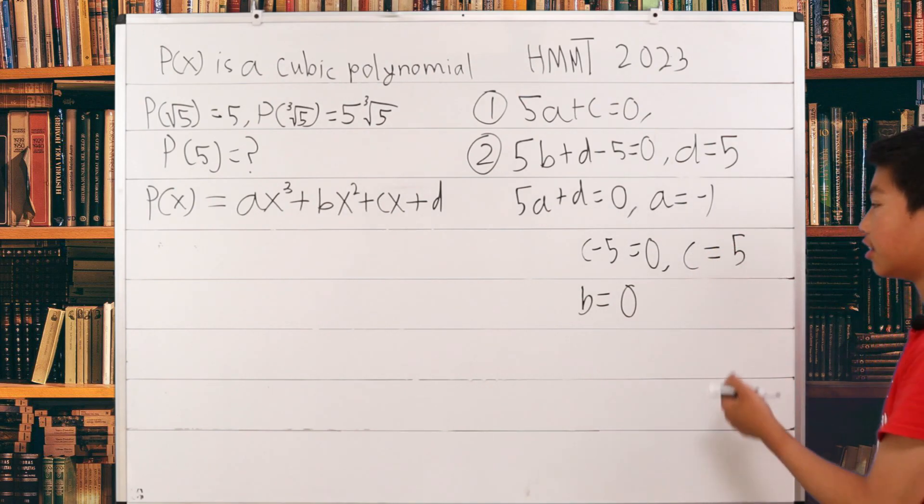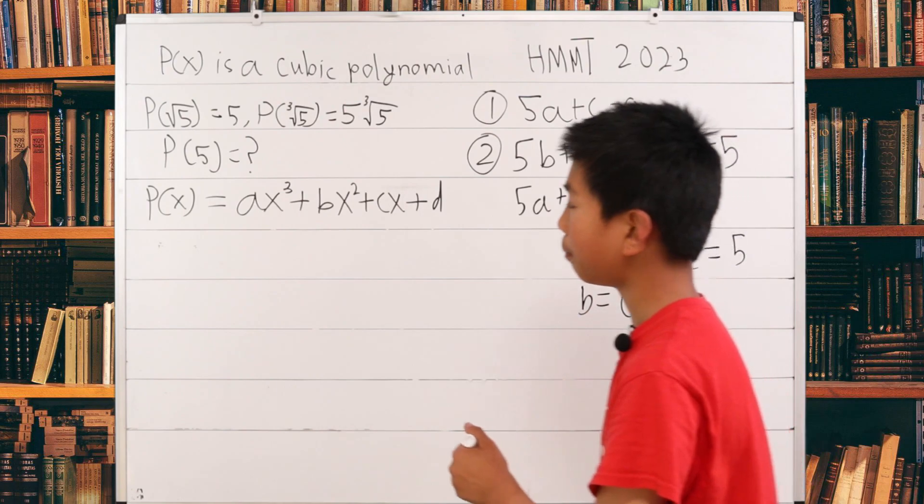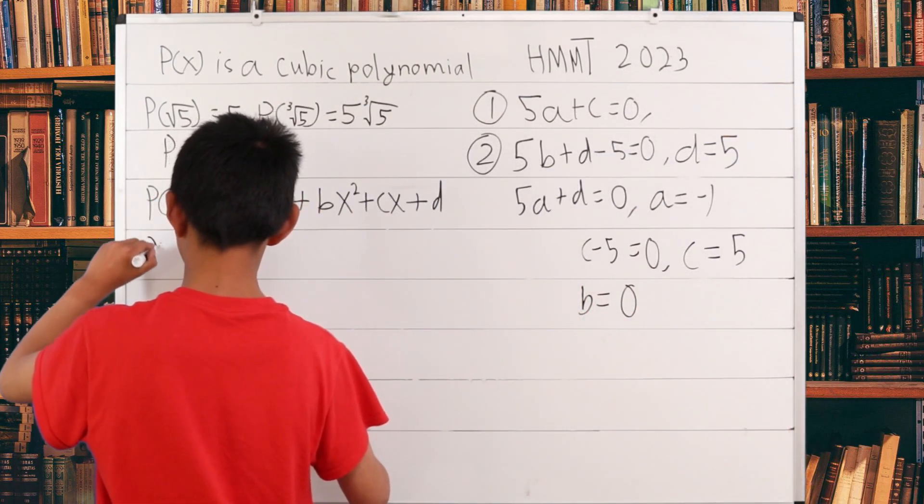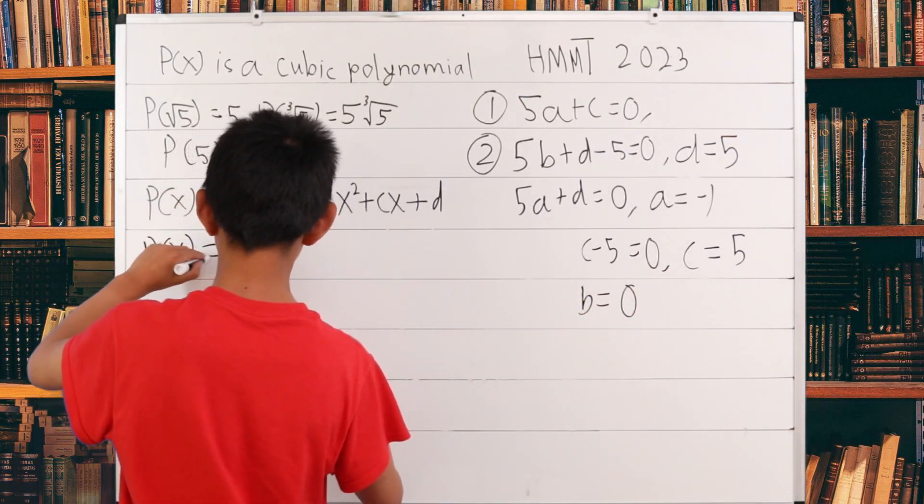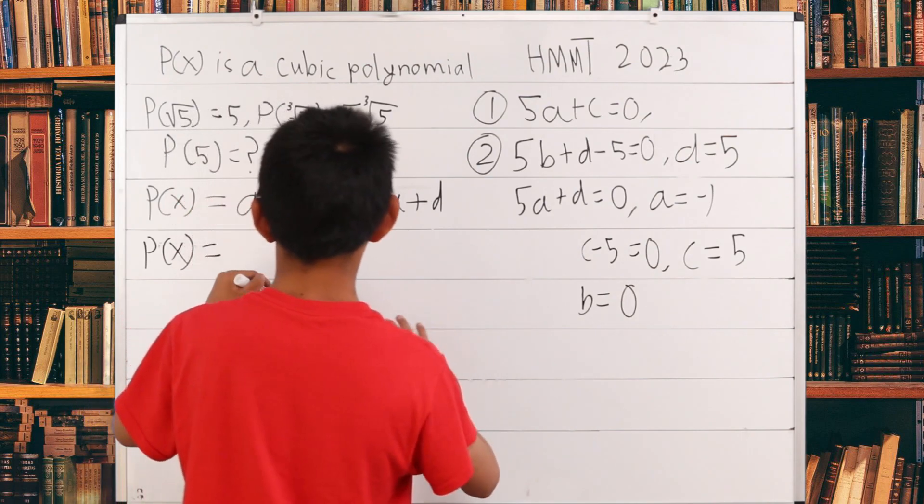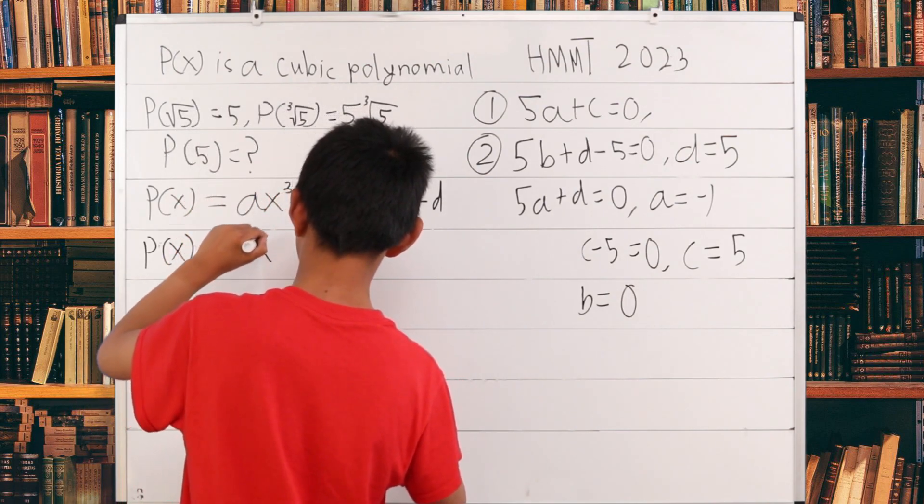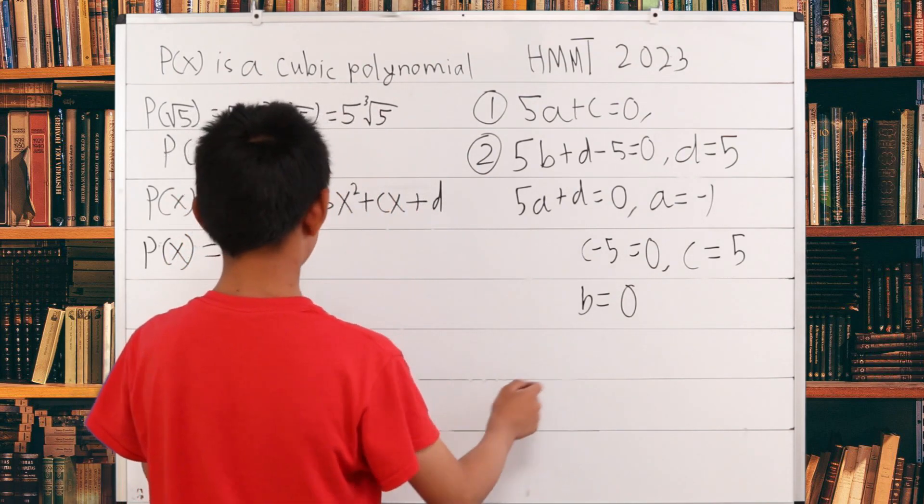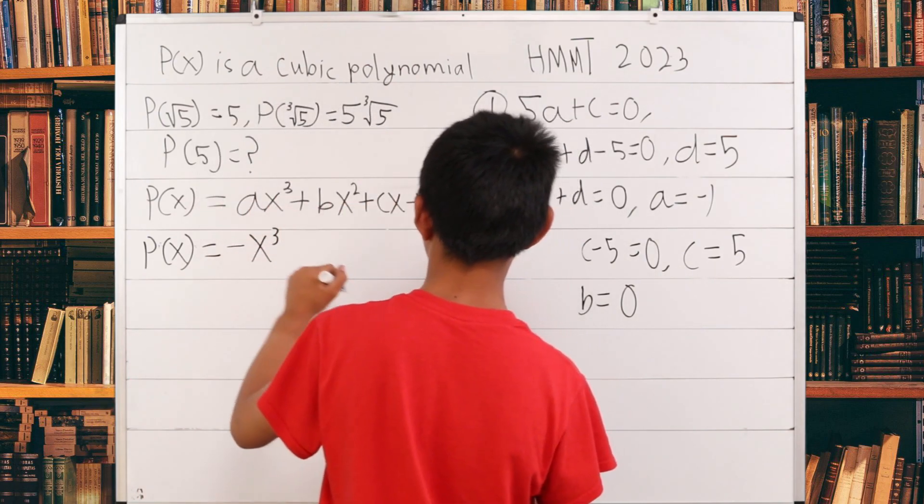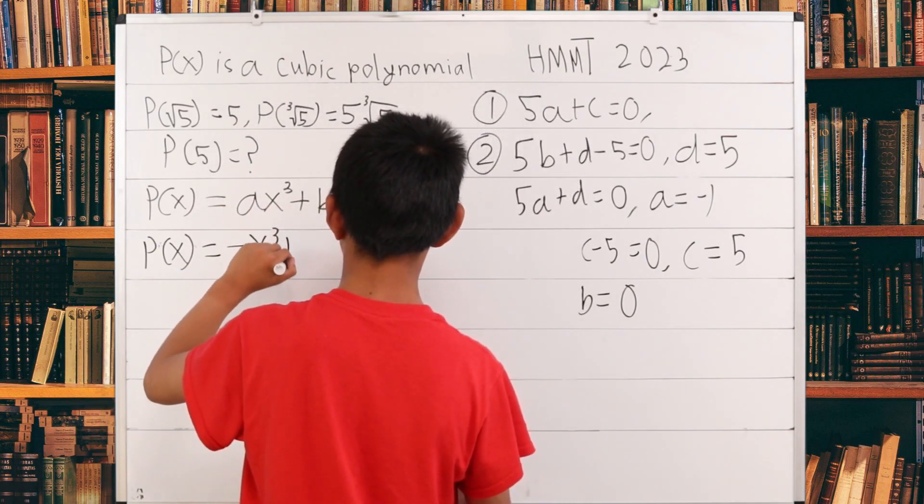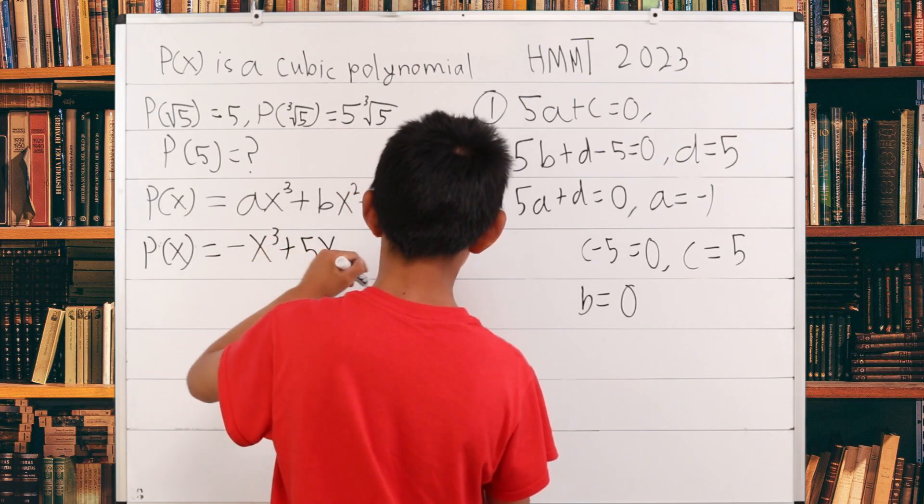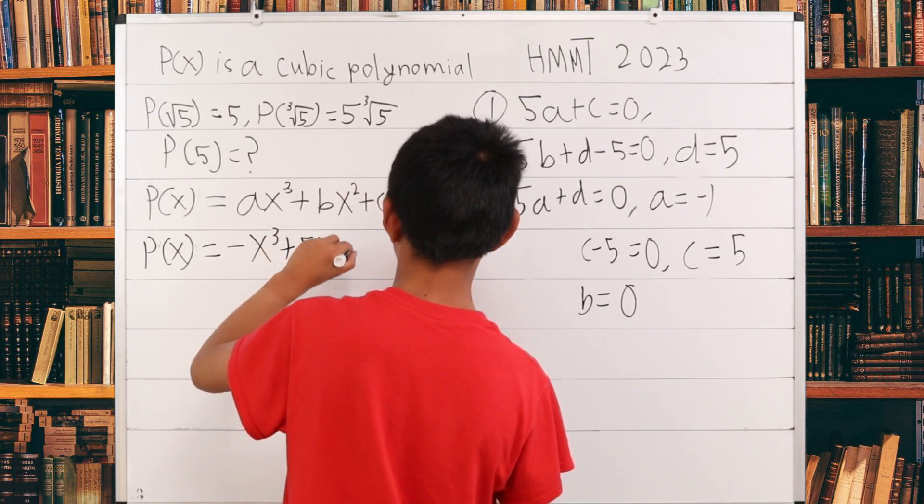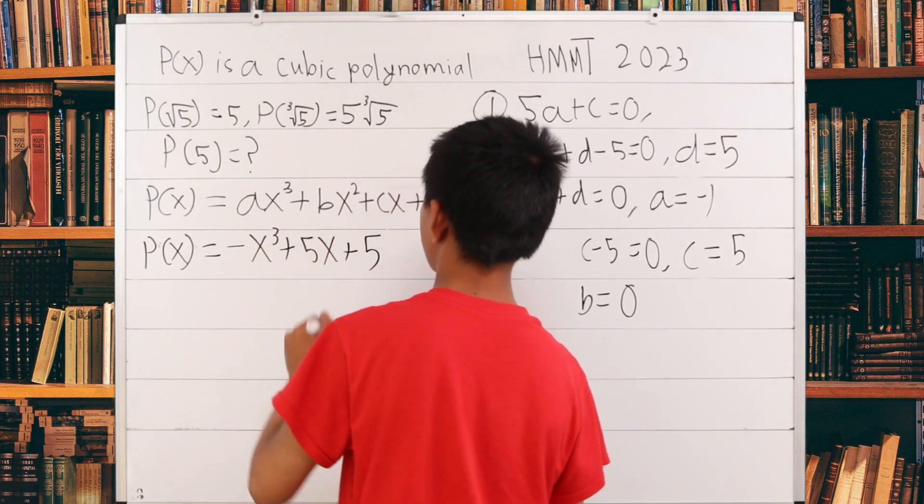The first thing we need to do here is we can write our P(x) equation. P(x) equals, well, a is -1, so -x³. b is 0, so there is no bx² term. c is 5, so +5x. d is 5, so +5.